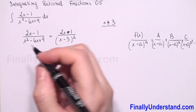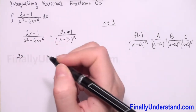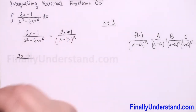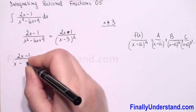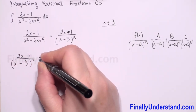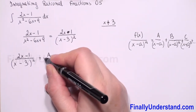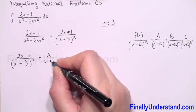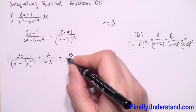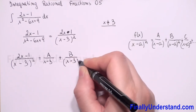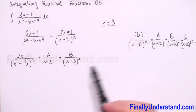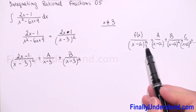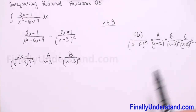In our case n equals 2, so we rewrite our rational fraction: 2x minus 1 over (x minus 3) squared equals A over (x minus 3) plus B over (x minus 3) squared. Because n equals 2 we stop here. Now we will multiply both sides of our equation by the square of the denominator.